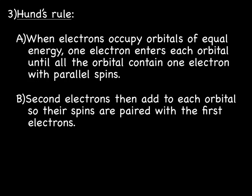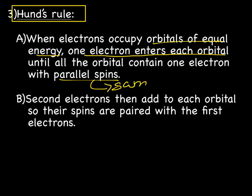And the last rule is called Hund's rule. And Hund's rule is the rule that's most often broken when trying to draw orbital diagrams. So keep that in mind. Be careful with this one. So when electrons occupy orbitals of equal energy, one electron enters each orbital until all the orbitals contain one electron with parallel, parallel meaning the same, spin. Then the second electrons go by and add into each orbital so that their electrons are paired with the first electrons, meaning opposite spins.